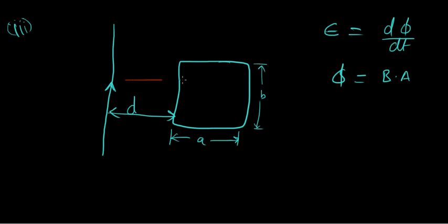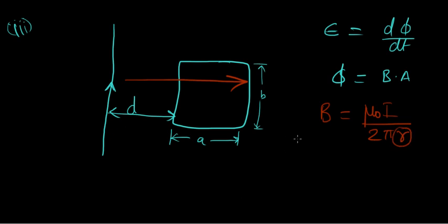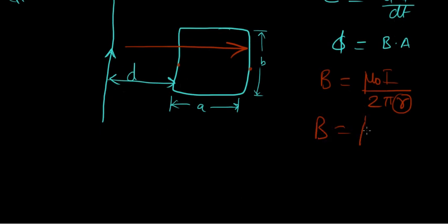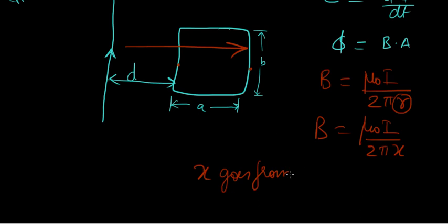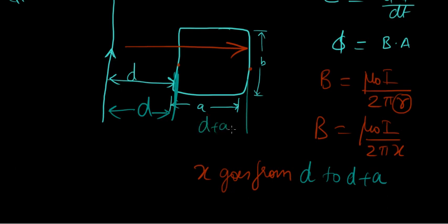The magnetic field formula for a straight current-carrying conductor is μ₀i/2πr, where r is the distance. So here the field varies as μ₀i/2πx, where x goes from d to d+a. If we call that varying distance x, and take an elemental area strip of width dx, we can set up the integral to find flux.